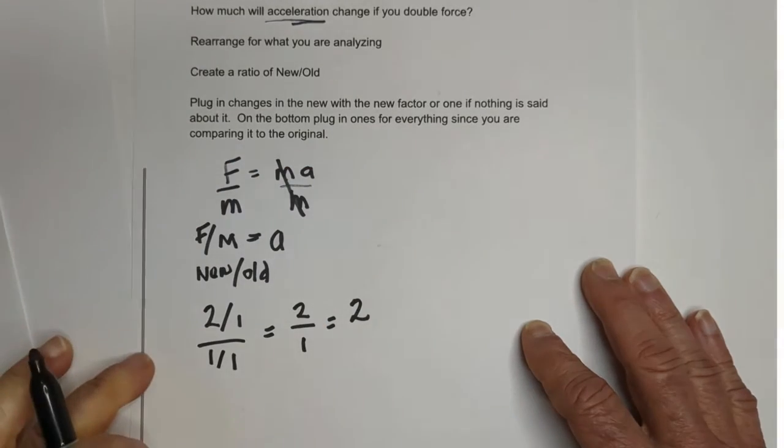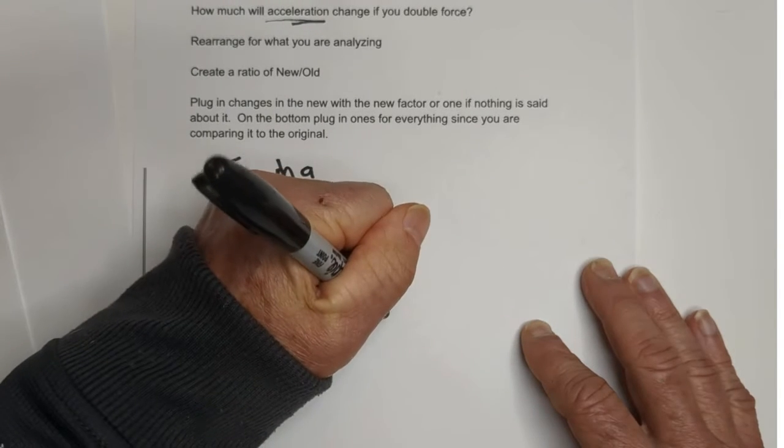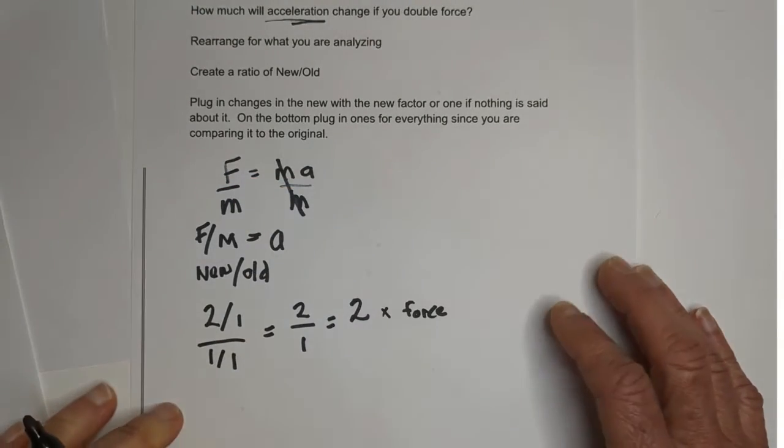So we're going to have two times the original acceleration. It's two times the original force or value. Let's look at another example.